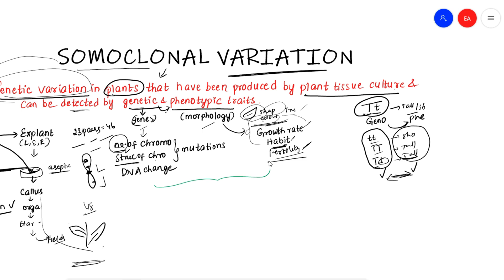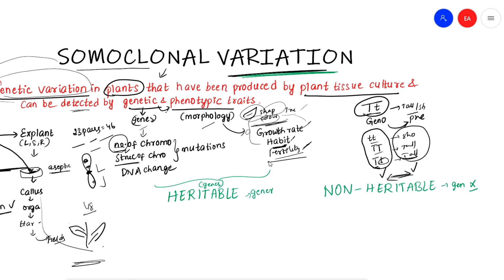We know that this variation is, most of the time, heritable — it is passed to the next generation. There are two types: heritable and non-heritable. There is also epigenetic variation, which is non-heritable. Mostly, somaclonal variation can be heritable genetic variation or non-heritable epigenetic variation.